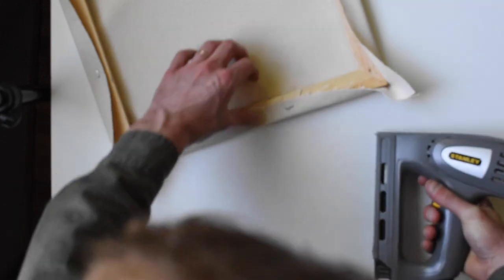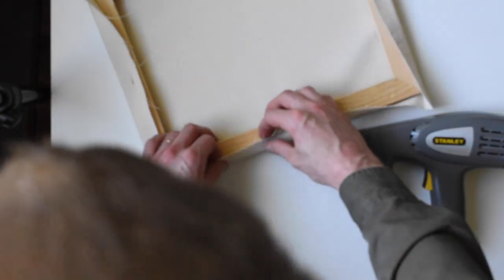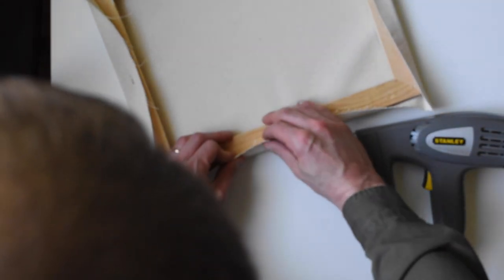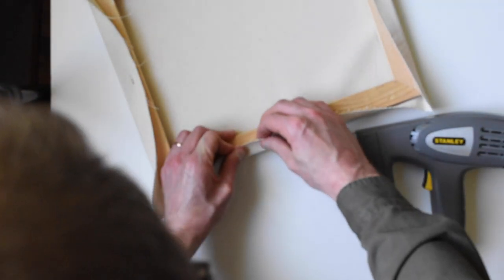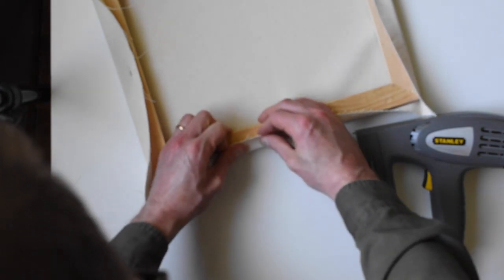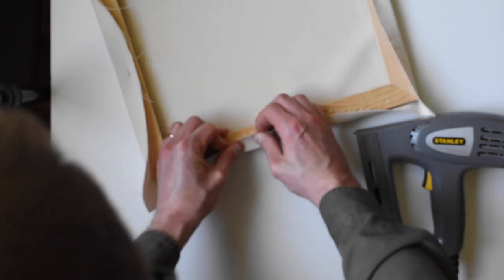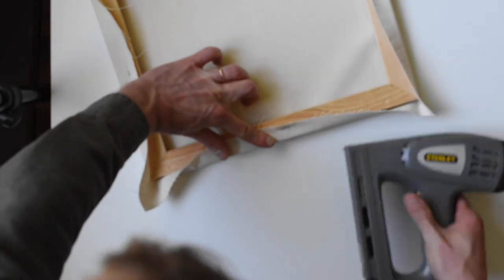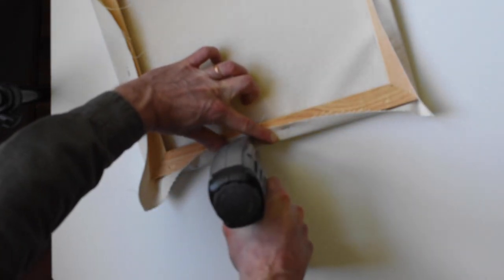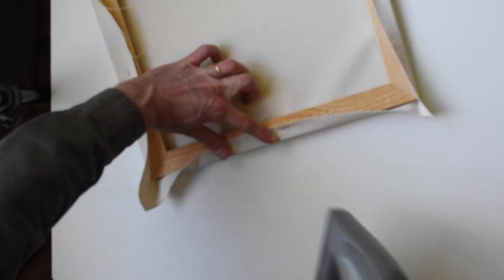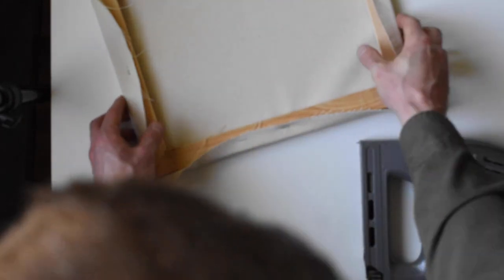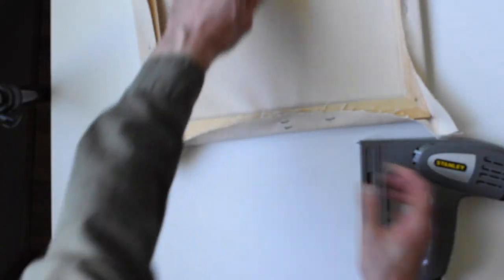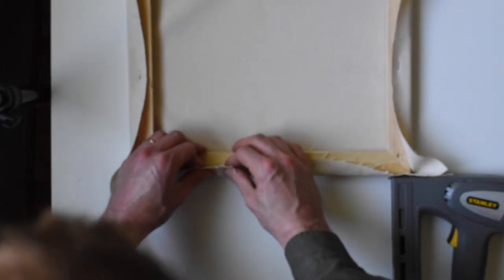So after you've done all of the middle of your sides, then you want to work your way right next to it and then go from there. So I think as a rule he usually does about two to three inches and that's where he'll put the next staple. It's good to have as many as possible just so you're getting it as tight as possible.